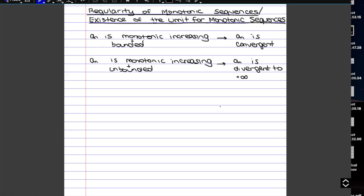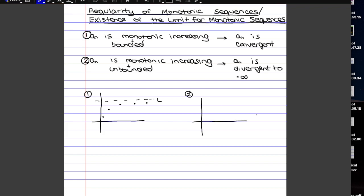Before we look at the proof, let's consider a few examples. For the first case, we could have a sequence that converges to a number, which we can call L. For the second case, if it's increasing and unbounded, keep in mind that any increasing sequence is automatically bounded below. So if it's unbounded, it must specifically be unbounded above.